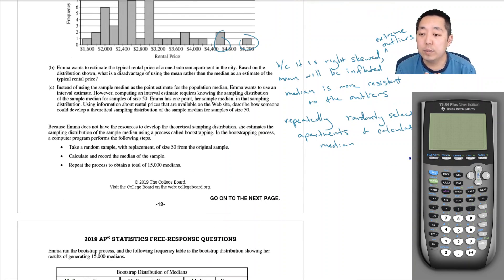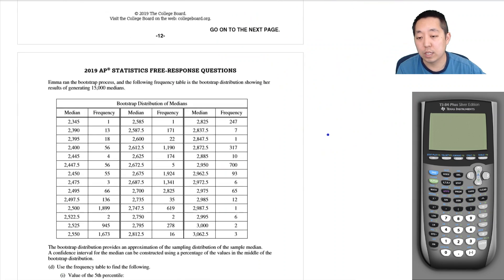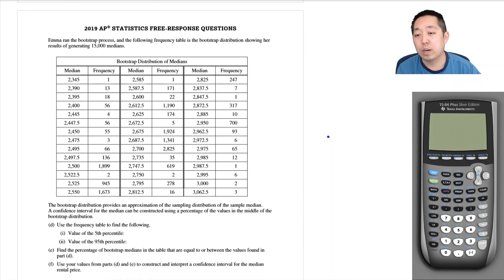Because Emma does not have the resource to develop a theoretical sampling distribution, she estimates the sampling distribution of the sample median using a process called bootstrapping. In the bootstrapping process, a computer program takes a random sample with replacement of size 50 from the original sample, calculates and records the median of the sample, and repeats the process to obtain 15,000 medians.